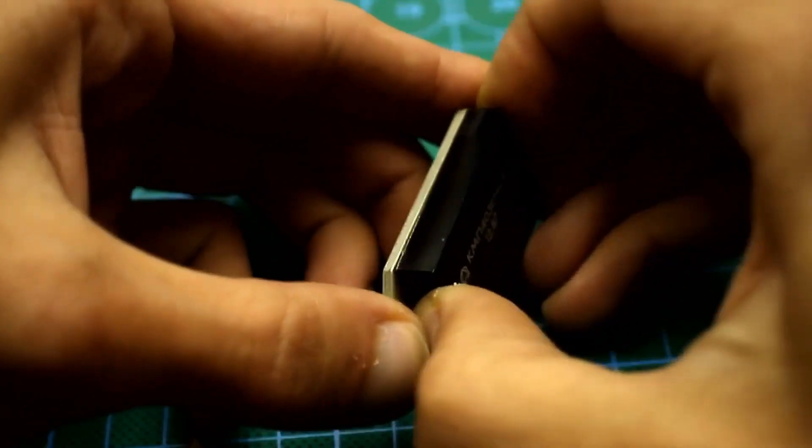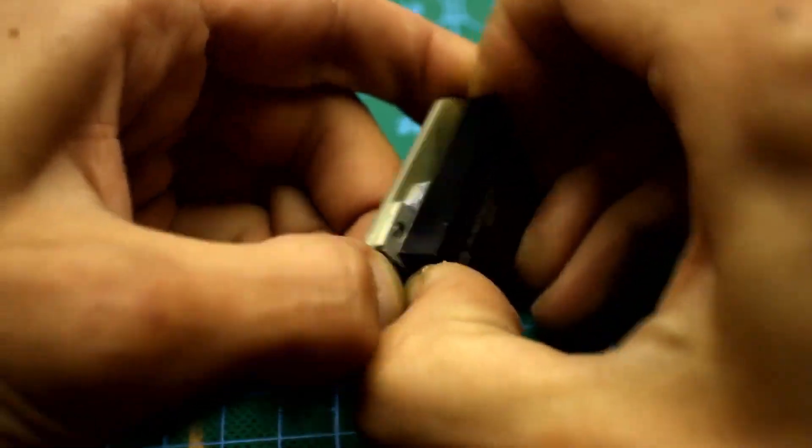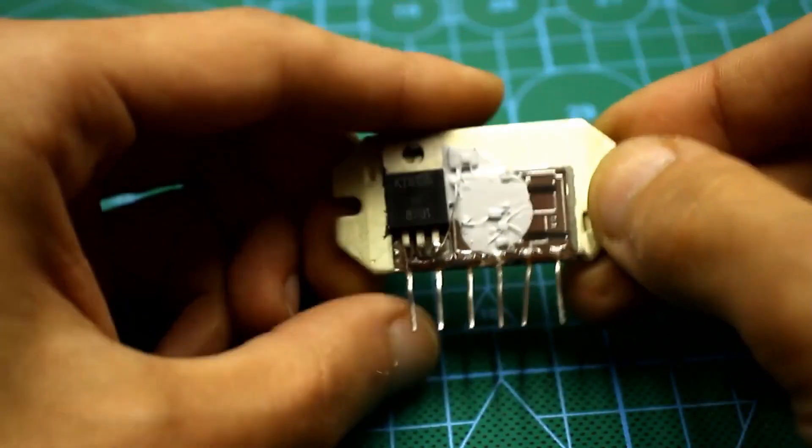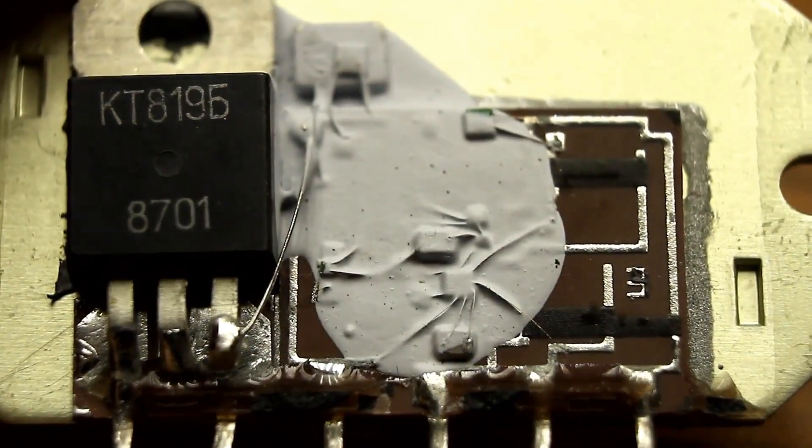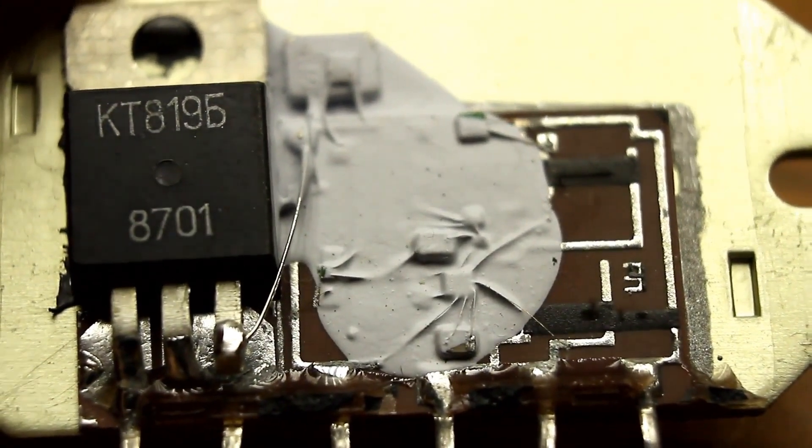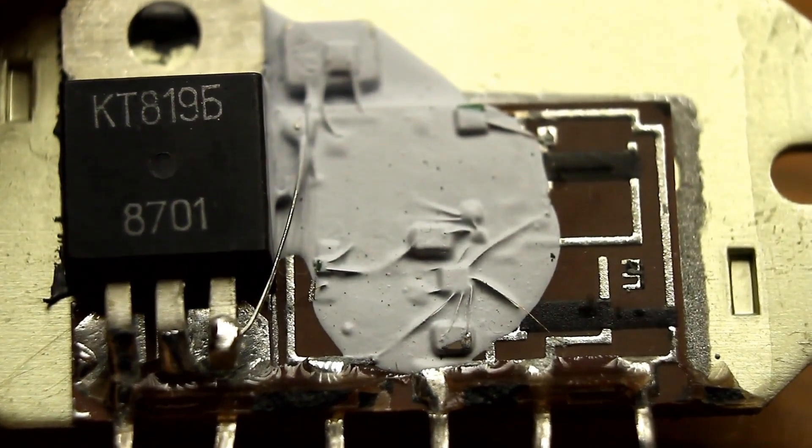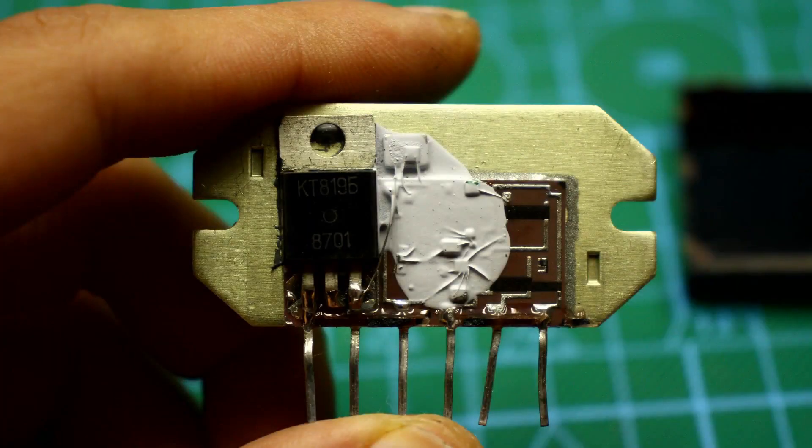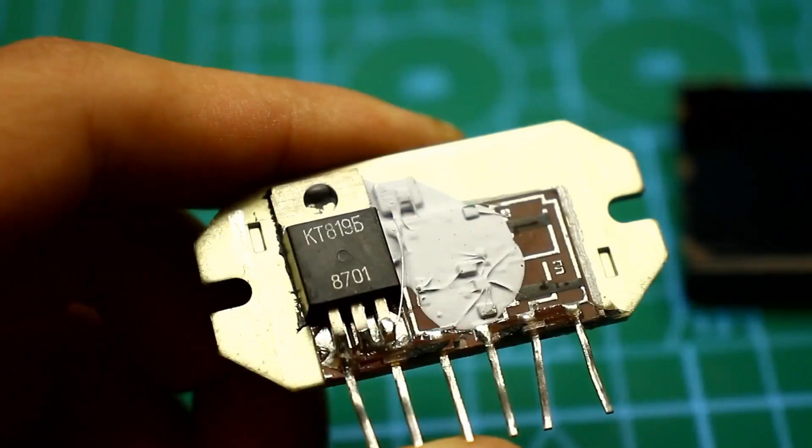Under the plastic cap, we see a piece of ceramic with traces. Most of the components are coated with something for reliability. The power transistor stands out, a very full-sized KT819. So, if the microassembly suddenly breaks and the cause is the output transistor, it can be easily replaced.